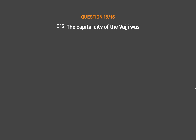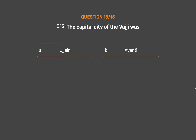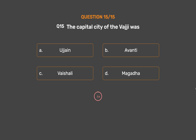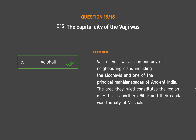Question No. 15. The capital city of Vajji was? Option A: Ujjaini. Option B: Avanti. Option C: Vaishali. Option D: Magadha. The correct answer is Option C: Vaishali. Vajji, or Vrijji, was a confederacy of neighboring clans including the Licchavis and one of the principal Mahajanapadas of ancient India. The area they ruled constitutes the region of Mithila in northern Bihar, and their capital was the city of Vaishali.